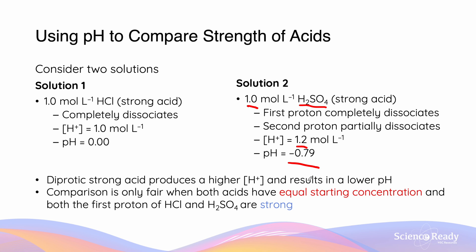A diprotic strong acid such as H₂SO₄ produces more H⁺, meaning it has a lower pH. However, we can still compare these two acids because both the first proton of HCl and of H₂SO₄ are strong.